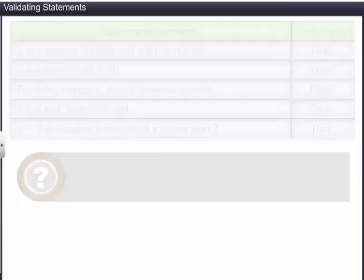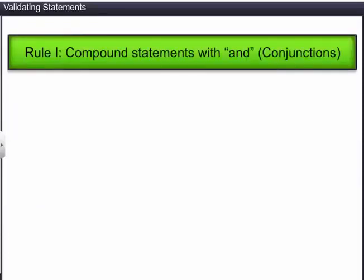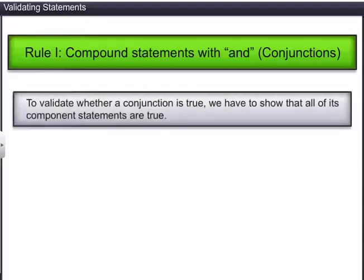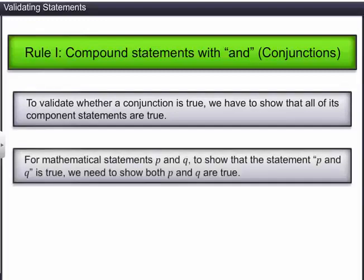The first rule is used to validate compound statements with the connective word 'and', or conjunctions. To validate whether a conjunction is true, we have to show that all of its component statements are true. If P and Q are mathematical statements, to show that the statement 'P and Q' is true, we need to show that both statements are true.